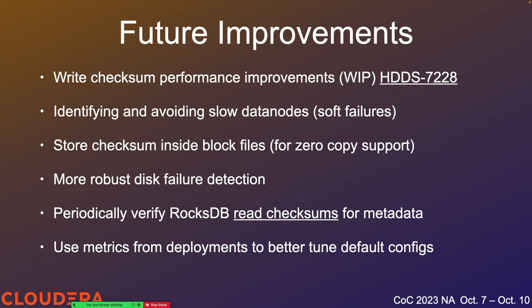RocksDB has its own checksumming mechanism — checksums stored on write and verified on read — so there's the possibility of introducing a RocksDB integrity scanner in the future. We also have metrics for all of these scanners, and everything we've talked about is tunable via config keys. We picked defaults we think are reasonable, but it's important to look at various Ozone deployments over time, examine metrics like how much bandwidth we're giving to scanners, how frequently they're running, and how many failures they're finding, so we can tune these defaults to work better for the majority of cases.